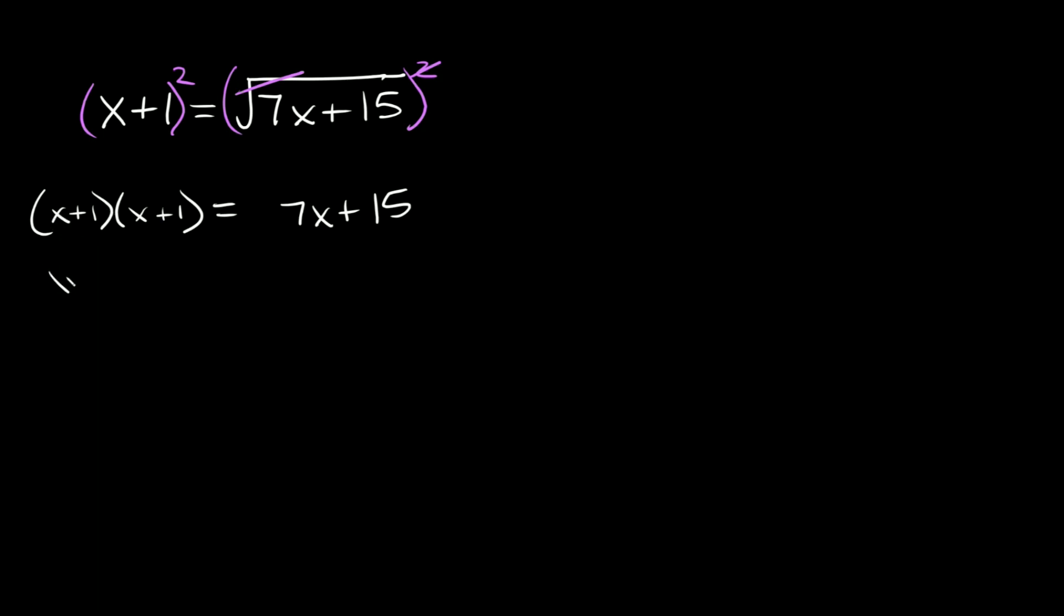So we're going to have x squared plus 1x plus 1x plus 1, and that's going to be equal to this side over here, 7x plus 15. Now let's simplify over here really quick. We can combine like terms. 1x plus 1x is just 2x. So here we have x squared plus 2x plus 1 is equal to 7x plus 15.